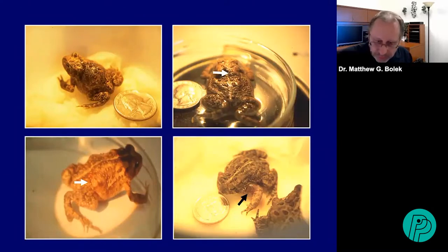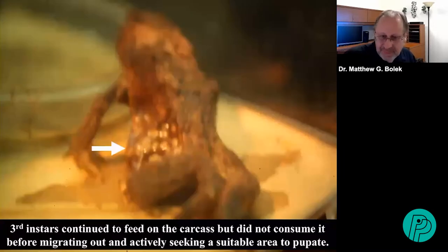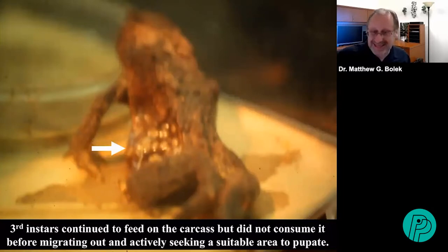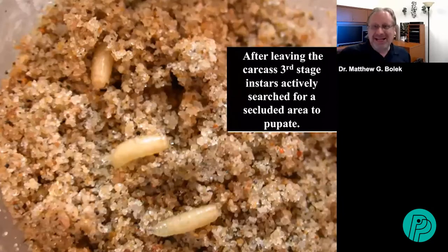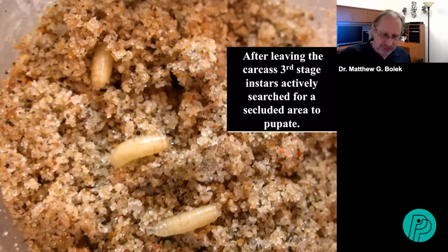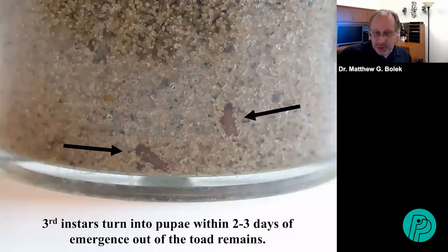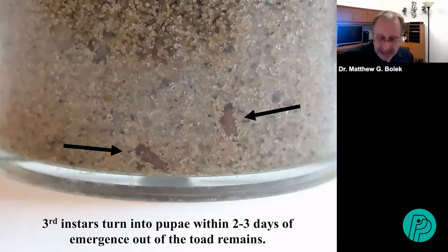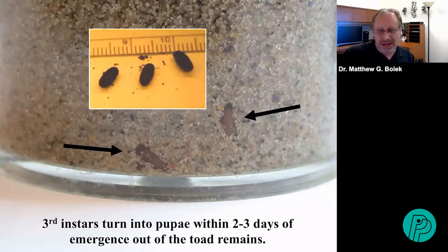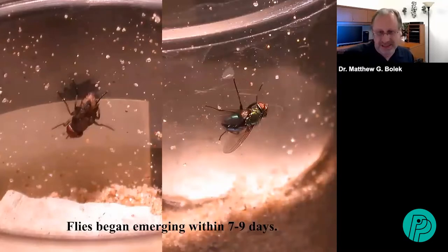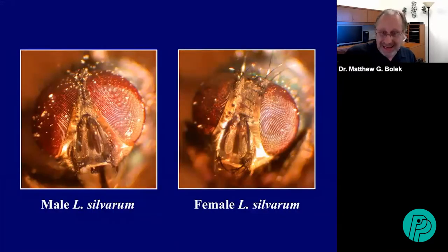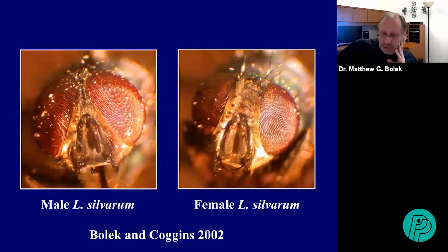Within another hour, an open wound developed on the toad — usually only one wound per amphibian — sometimes on the head, sometimes on the back, in this case on the forearm. The maggots all fed as a group. Within three to seven days of infection, the amphibian would die, and the third instars continued to feed on the carcass before migrating out to seek a suitable area to pupate. Third-stage instars burrowed into sand or dirt and turned into pupae within two to three days of emerging from the toad remains. Those flies emerged within seven to nine days of the pupal stage.